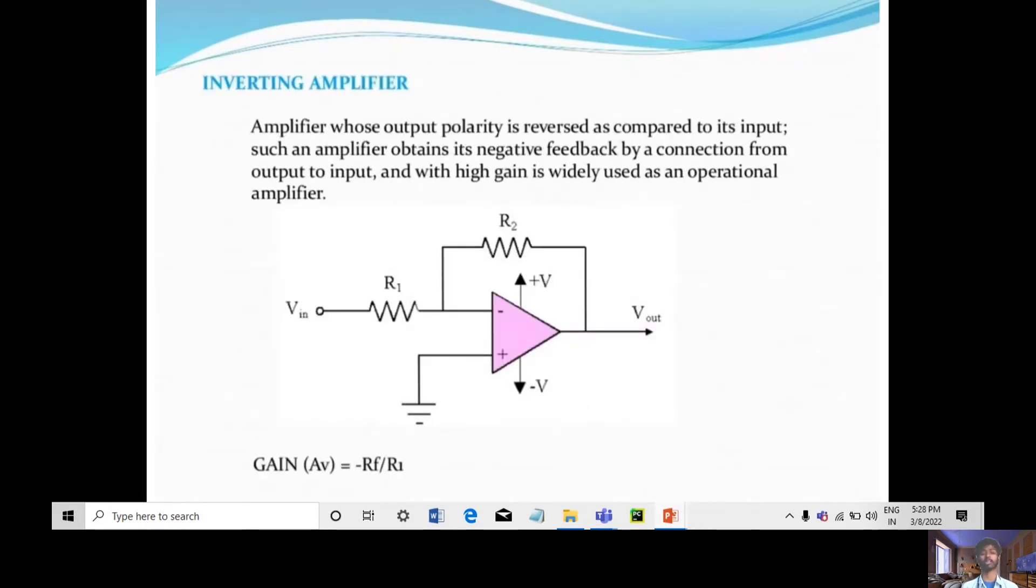An inverting amplifier is one where the output voltage is reversed compared to its input. This amplifier obtains negative feedback by connections from the output to input, with high gain widely used in operational amplifier applications.